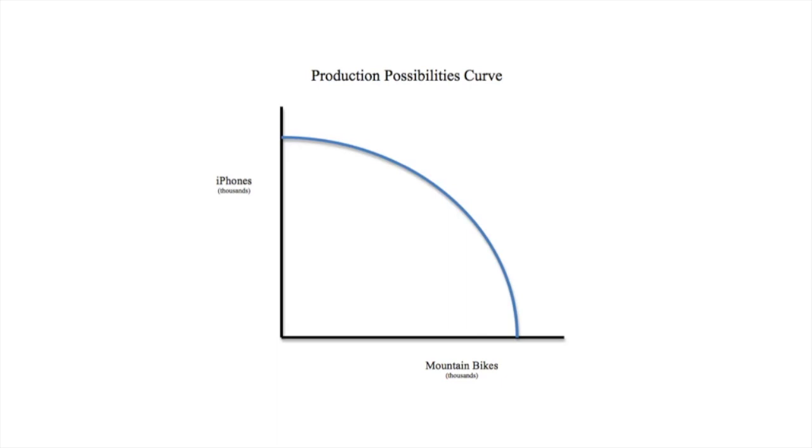Check it out. There is the production possibilities curve, which represents all the production possibilities between two things in an economy. Could be goods, could be services, could be guns, could be butters, or in the absurd, it's iPhones and mountain bikes.